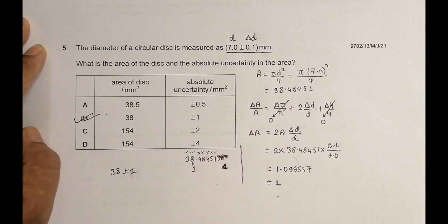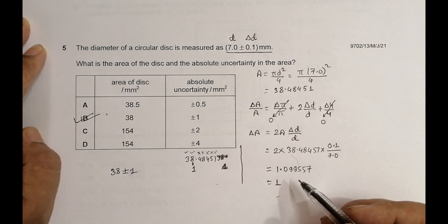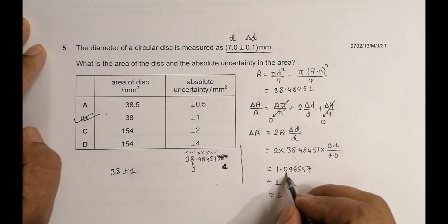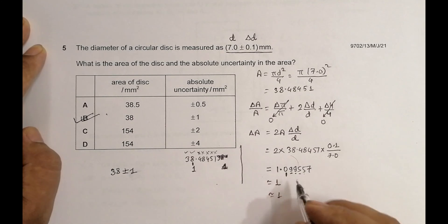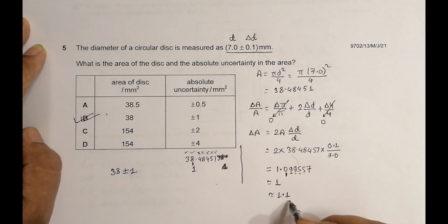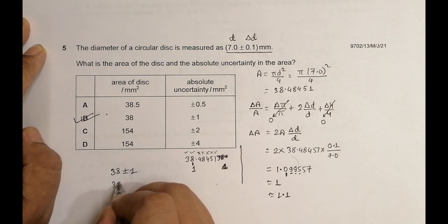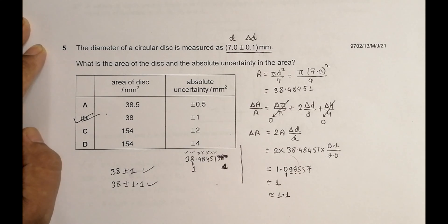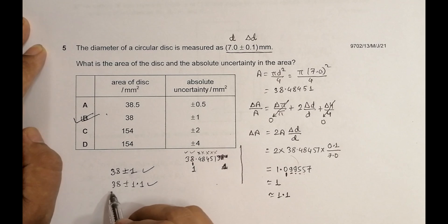In some approaches, we are allowed two significant figures for the uncertainty. In that case, we write up to the first decimal place: 1.099... rounds to 1.1, so the uncertainty is 1.1. The area quantity is still 38 (not 38-point-something), giving 38 ± 1.1. So either 38 ± 1 or 38 ± 1.1 could be correct depending on whether 1 SF or 2 SF is used for uncertainty — nothing else is correct.